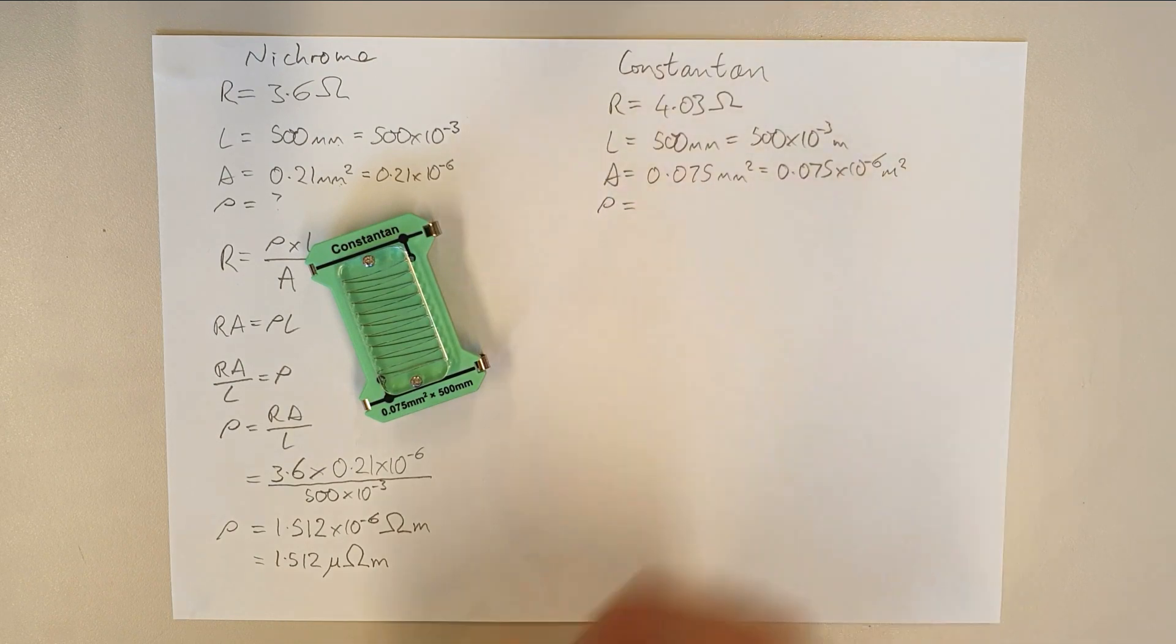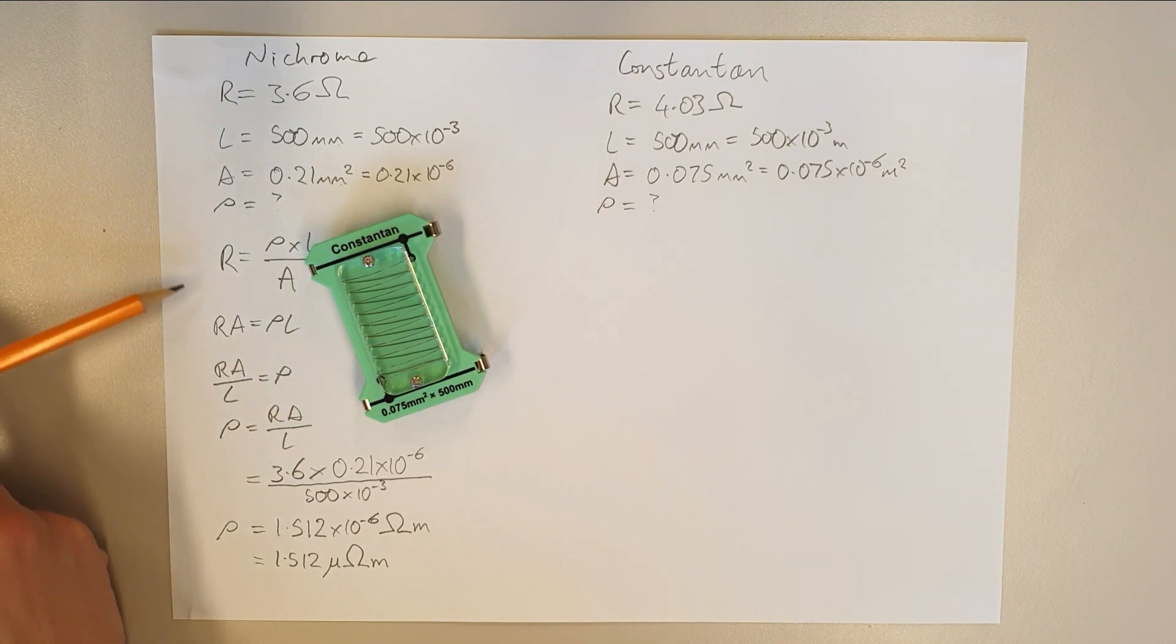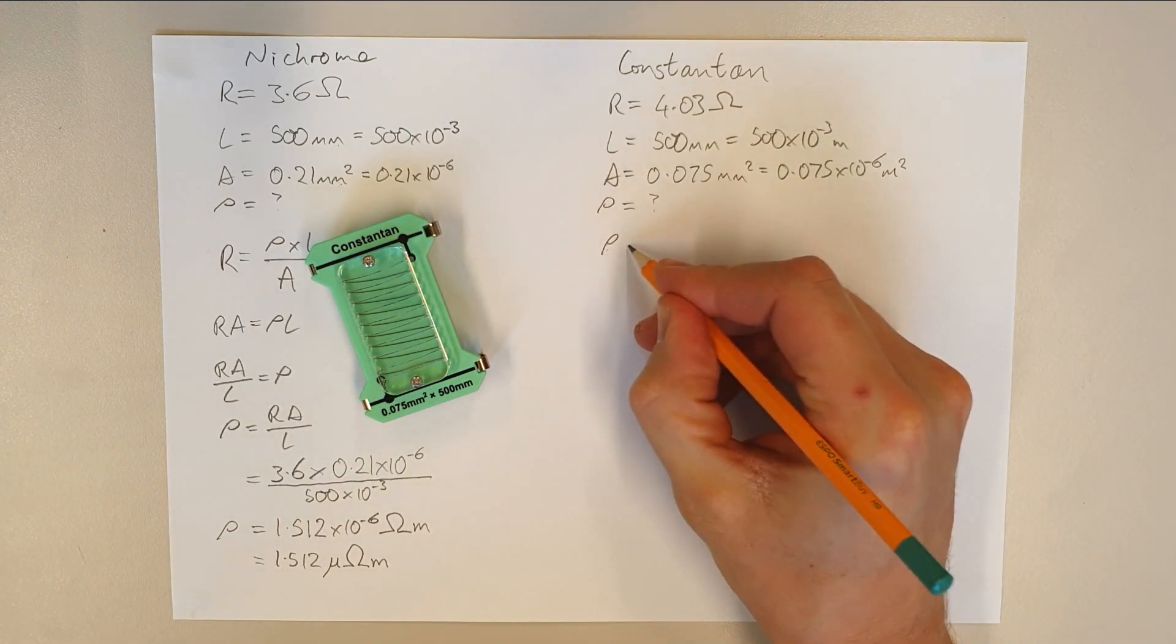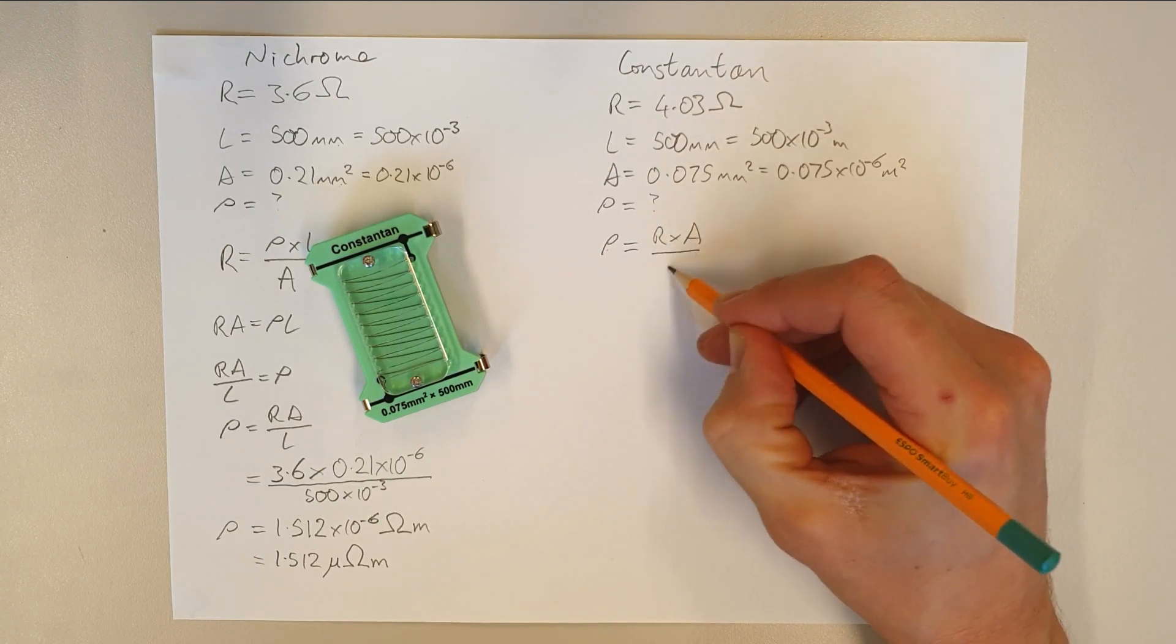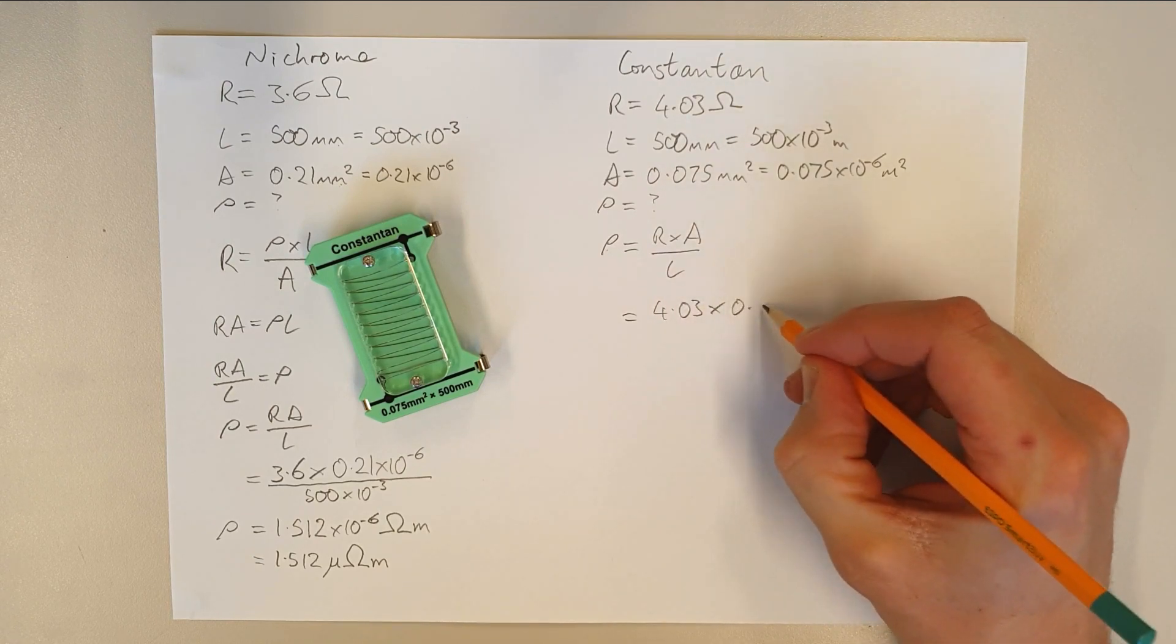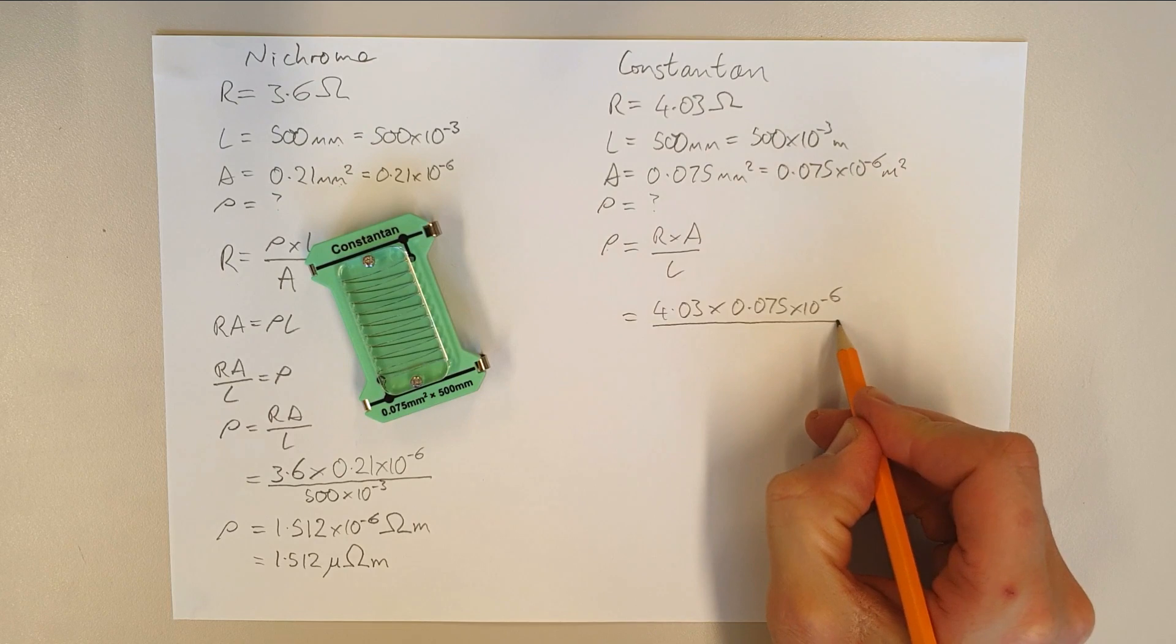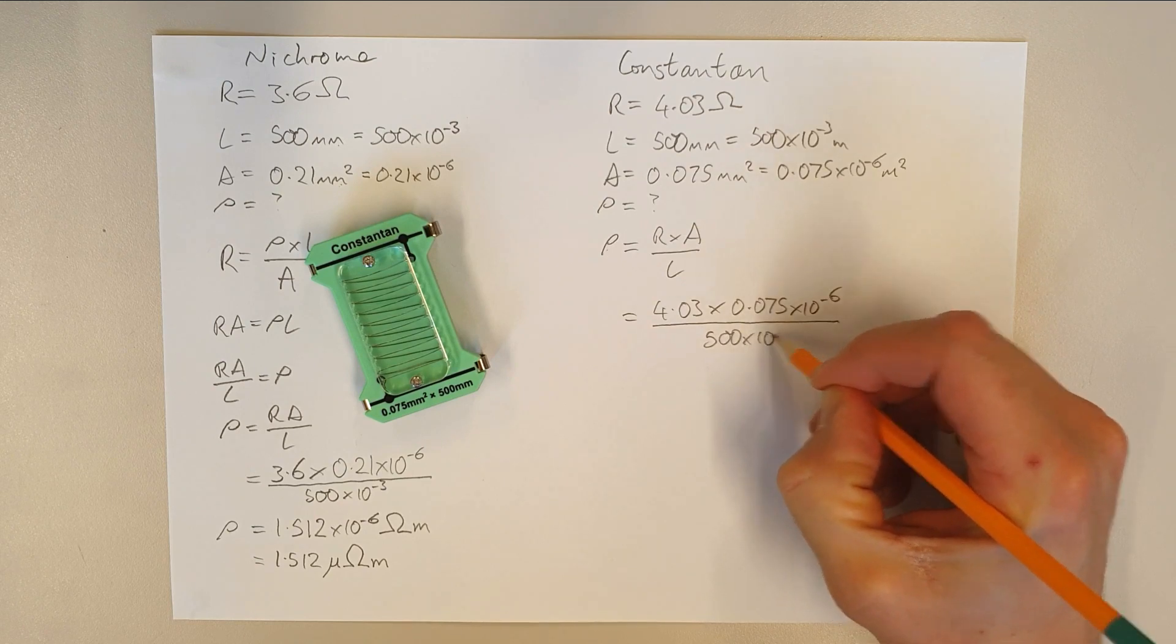And once again, we are trying to figure out what the resistivity of our material is. So we don't know what that is yet. Let's try and figure it out. So we could go through the process of transposing the formula one more time. But actually, we've got to the point where we've got the formula we need. So we can just repeat that now we can say that the resistivity is equal to resistance multiplied by the cross-sectional area and divided by the length of the cable. So we can see there we've got 4.03 multiplied by the cross-sectional area of 0.075 times 10 to the minus 6. And then we're going to divide that by the length, which is 500 times 10 to the minus 3.